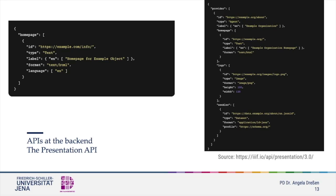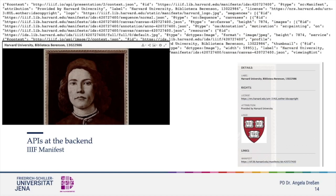The JSON file contains a title or label, the format, the ID and so forth. Here we have an example from the Harvard Hollis catalog, a painting by Botticelli in the IIIF version. When you click on the information icon, you will see some things written out, like the provider, the title or label, the license and a link to the IIIF manifest.